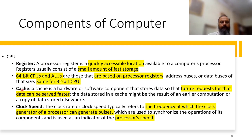Registers and cache are memories of the CPU. The CPU stores its data in registers. If the data size increases it is stored in cache. If the data size increases further it is stored in RAM, and after that in the hard drive.